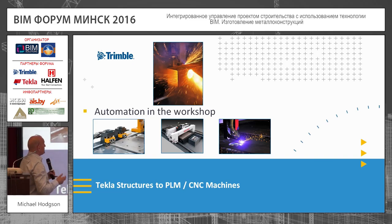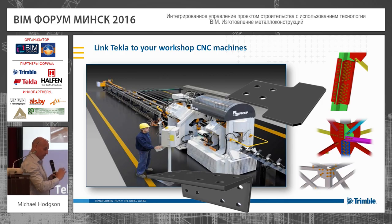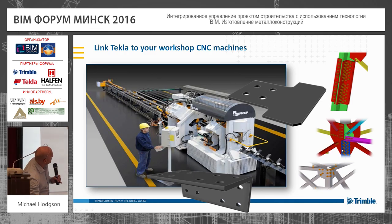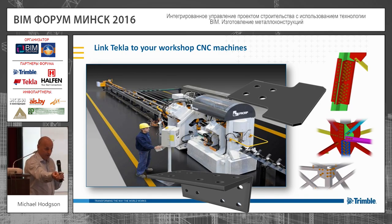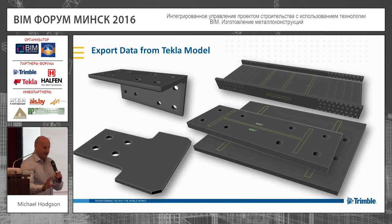What we then do is take that information down to the workshop floor machines. There are many kinds of machines I'm going to run through. We take the information from Tecla — I'll show you this live — and this information goes to the machine, which automatically makes these pieces based on the Tecla model. There's no manual input; simply email the file or put it on a drive, put it in the machine, and the machine will cut the pieces exactly as they were modeled in Tecla.